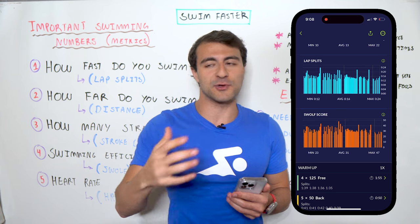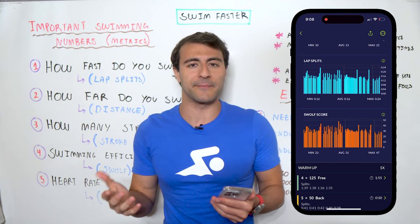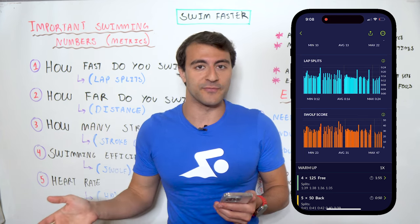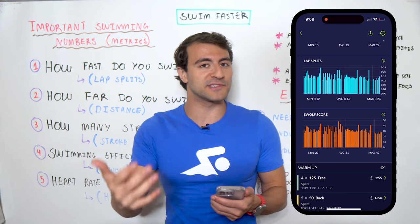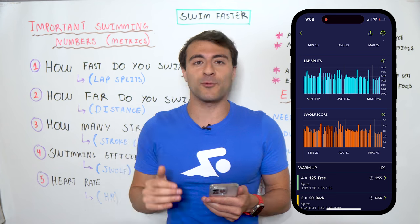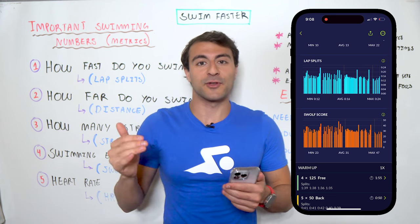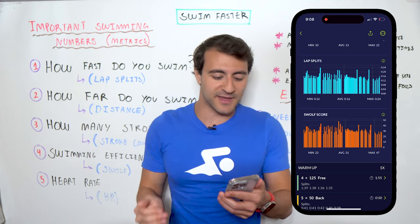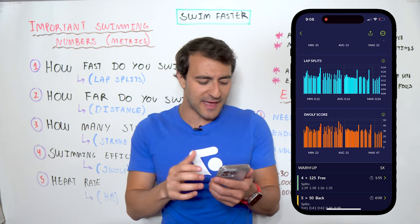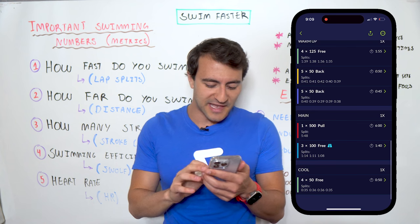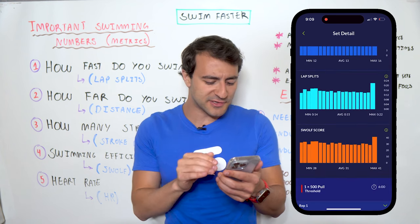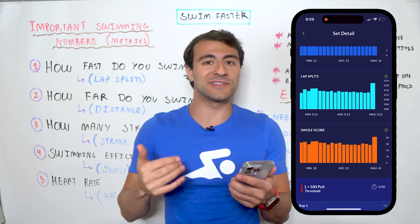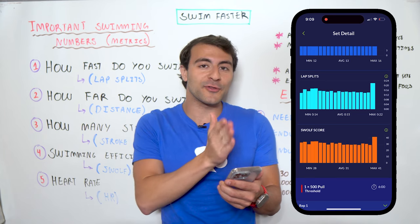The SWOLF score is personal — you can't say whether a 37 is good or bad without context; it's relative to you. If you swim faster but take more strokes, the number can go up. If you swim slowly but take very few strokes, the number can also go up because your time was slower. It's a balance of stroke count and speed, and that's why I love SWOLF.